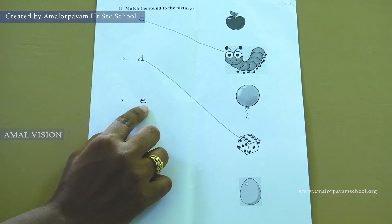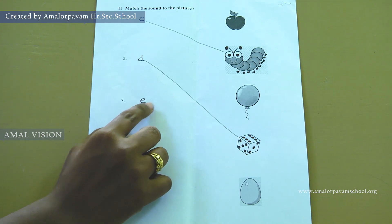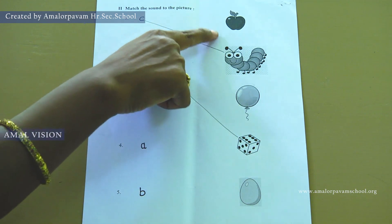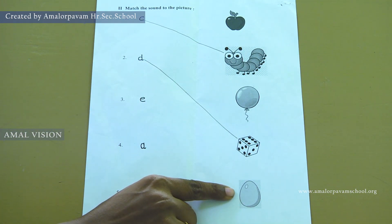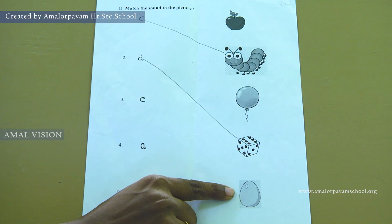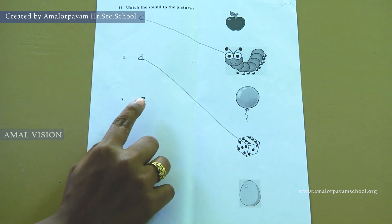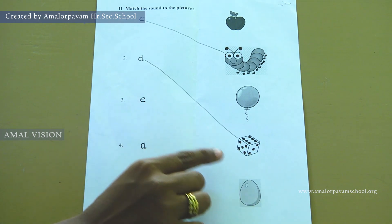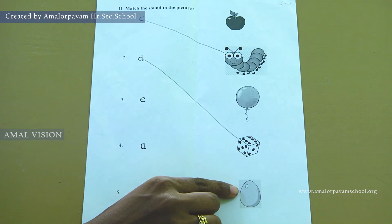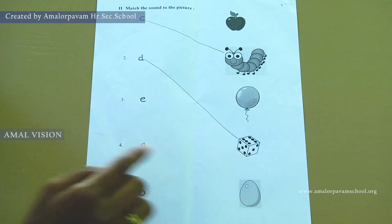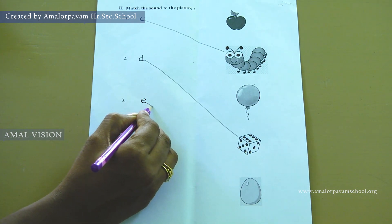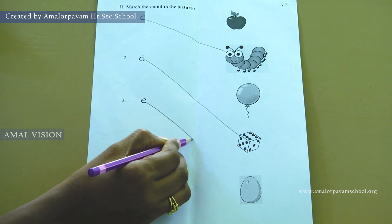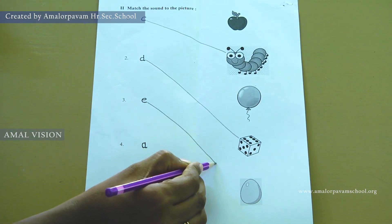This is A. Look at this side — what is this? This is an egg. A — egg. Take a pencil, match the sound A to the picture egg.